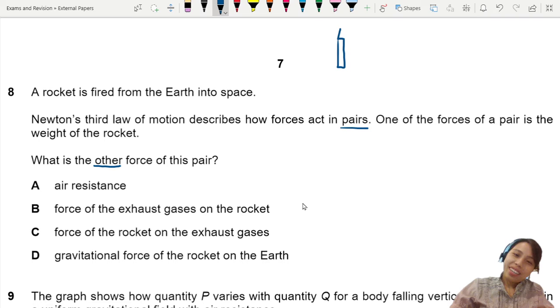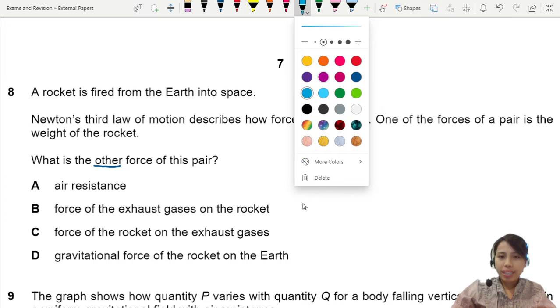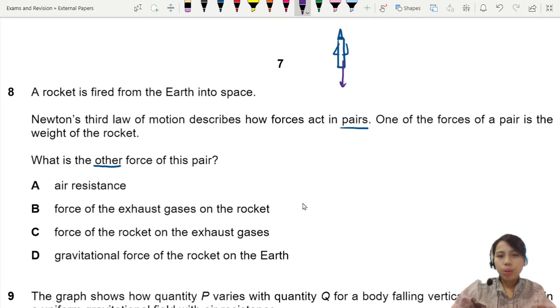You have a rocket trying to go to the moon, so you will have a weight. What is actually weight? Weight is also known as the Earth pulling the rocket - the gravitational force of Earth on the rocket.